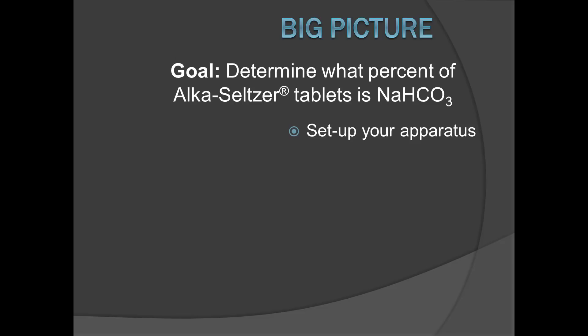Your goal for this lab is to determine the mass percent of sodium bicarbonate, NaHCO3, in Alka-Seltzer tablets. To accomplish this you'll first need to set up an apparatus that can measure the volume of gas that forms as a product of a reaction.